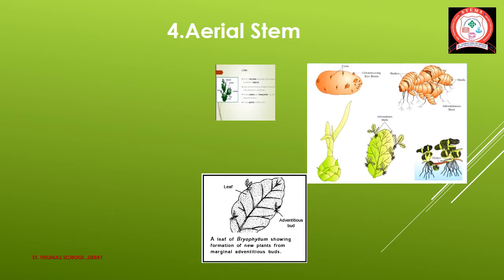The next type is aerial stems. Aerial modified stems of cacti develop new plants when stem segments fall on the ground.